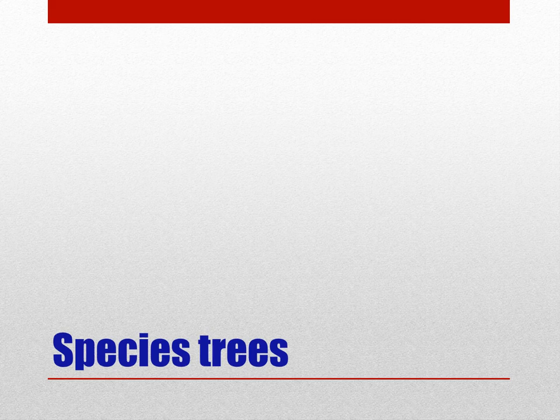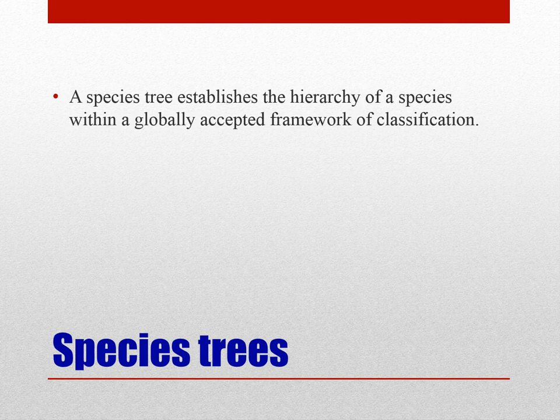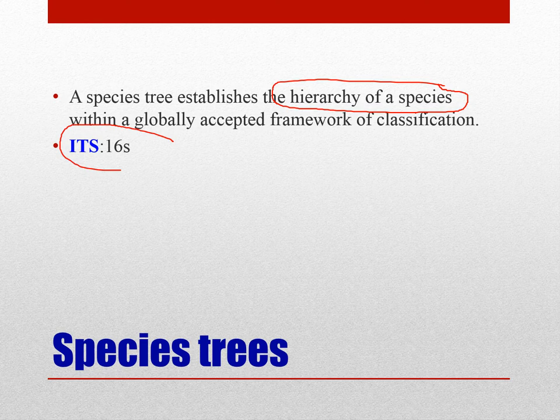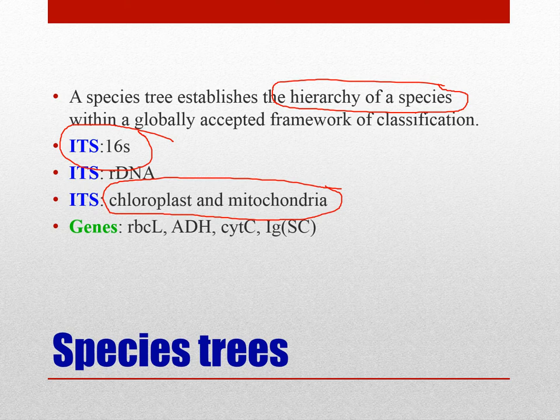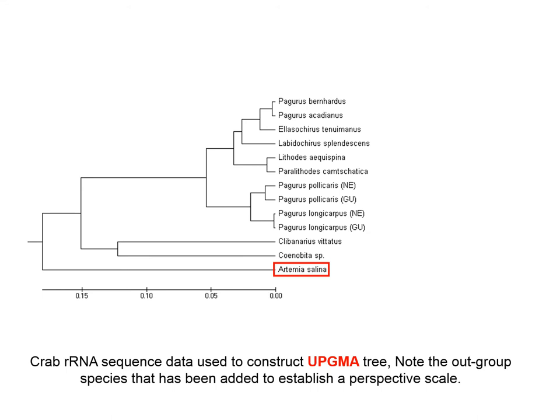We have two kinds of trees in phylogenetic analysis. Species trees establish the hierarchy of a species within a globally accepted framework. We also have the ITS — internal transcribed spacers — which are used for classification. In bacteria we use the 16S, and in plants, which is the focus of this lecture, we focus on the chloroplast and mitochondrial genomes, as well as other genes such as RBCL, cytochrome, and IgS genes.